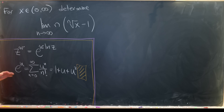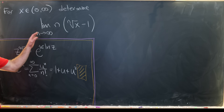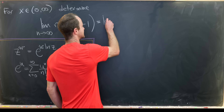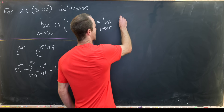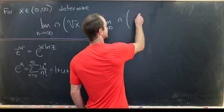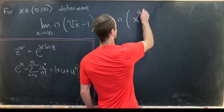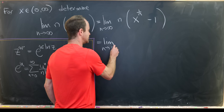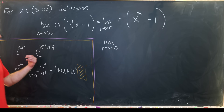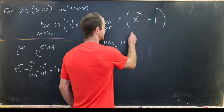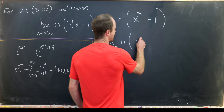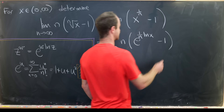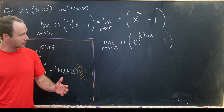Now let's go into our first solution. We rewrite the limit as n goes to infinity of n times x to the 1 over n minus 1. Then we take that x to the 1 over n and rewrite it using the exponential rule, giving us the limit as n goes to infinity of n times e to the quantity (1 over n times the natural log of x) minus 1.